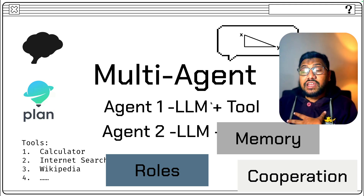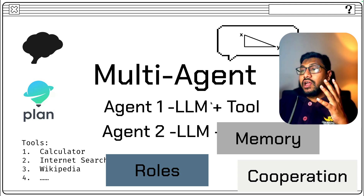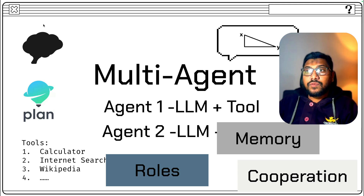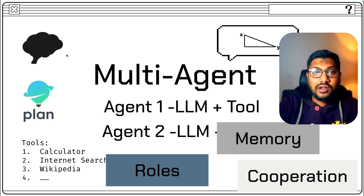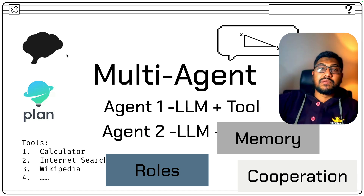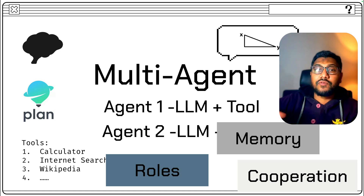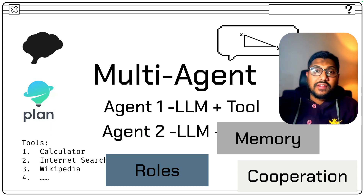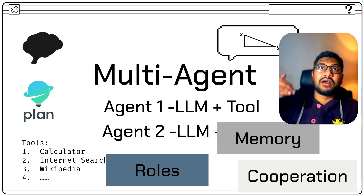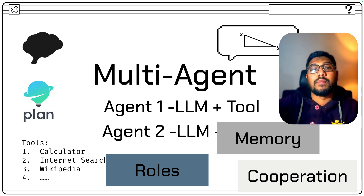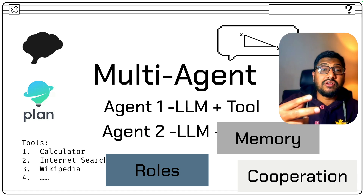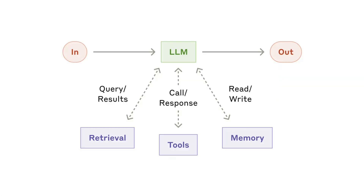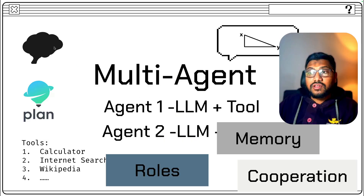First of all — and this is highly opinionated — I believe an agent should have memory capabilities. There should be some sort of memory layer, whether permanent or temporary, but for at least a given session there should be a memory layer that tells the agent what is happening. The agent can go to the memory at any time and understand what has been stored and what can be retrieved.